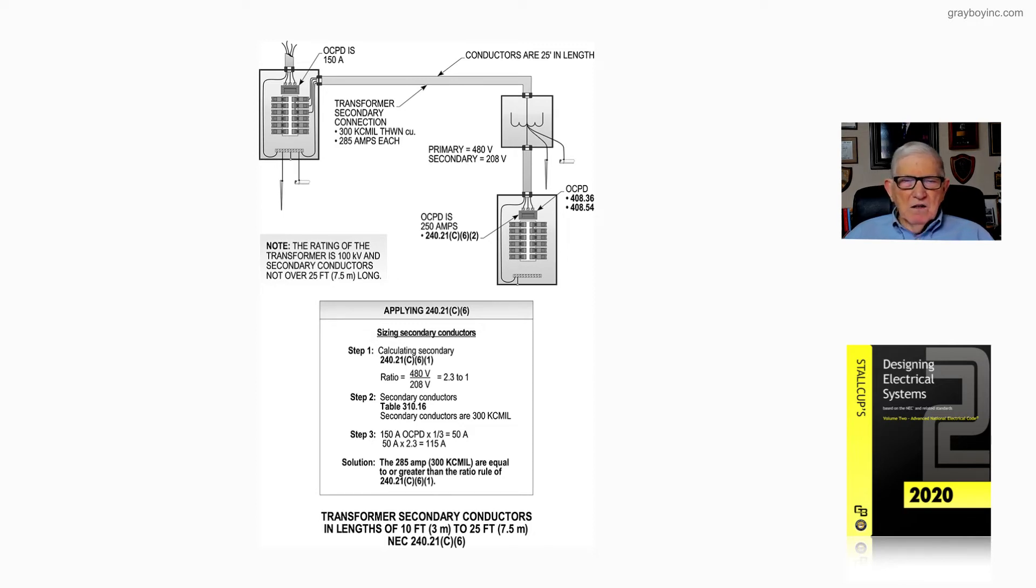Now, let's just take a look at the procedure for calculating the appropriate size conductors and overcurrent device and so forth to meet 240.21C6. So let's look at applying 240.21C6 in the other boxed-in information. And notice in step one, you have 240.21C6 item one.